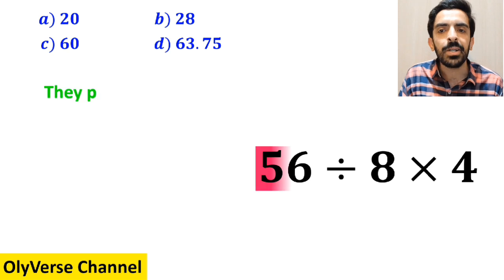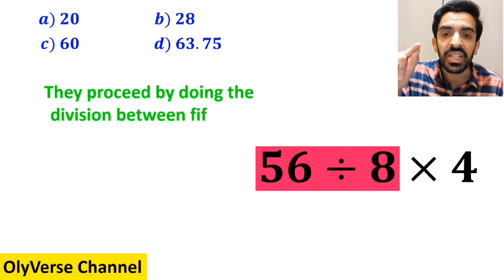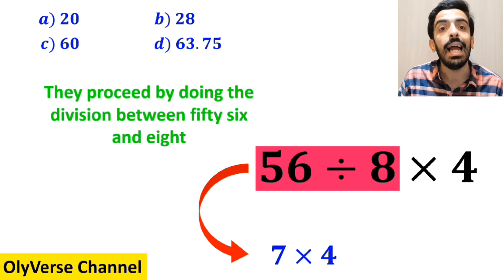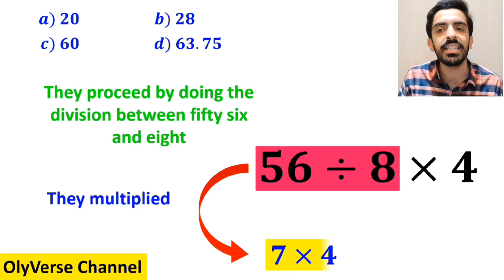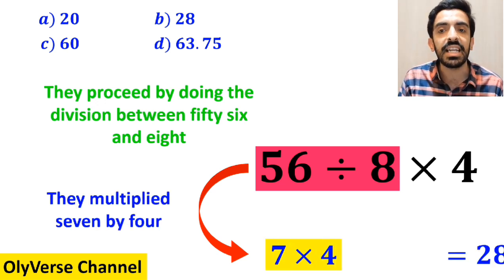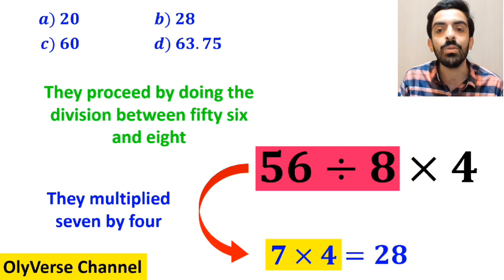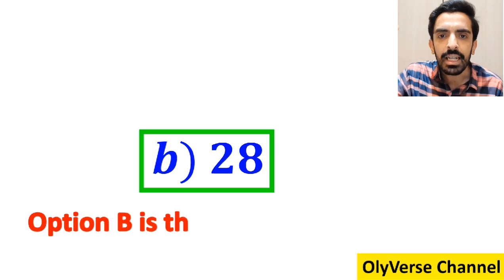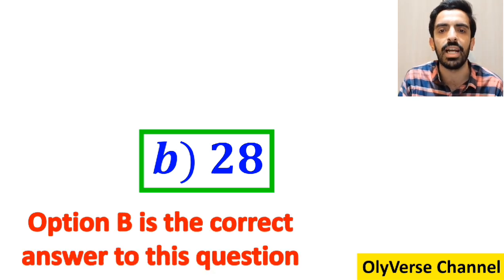Then, they proceed by doing the division between 56 and 8 which gives them 7 times 4. And finally, they multiply 7 by 4 which ends up with the answer 28. Then, without any hesitation, they quickly say that option B is the correct answer to this question.